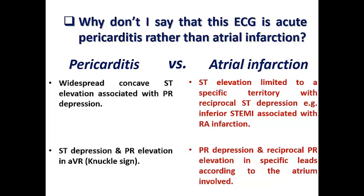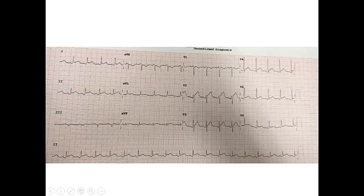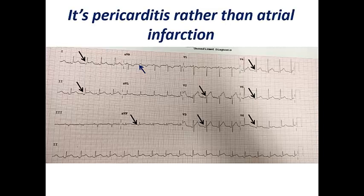For example, in inferior STEMI with right atrial infarction, I would see PR depression in leads II, III, and aVF, and PR elevation in leads I, aVL, and possibly V1 and aVR. The changes of ST and PR segments in atrial infarction are not widespread as in acute pericarditis; they are limited to a specific territory. Let's see this ECG example: we see widespread PR segment depression in leads I, II, aVF, and V2 to V6, associated with widespread ST elevation and the knuckle sign — PR elevation and ST depression in aVR and slightly V1 — indicating pericarditis rather than atrial infarction.